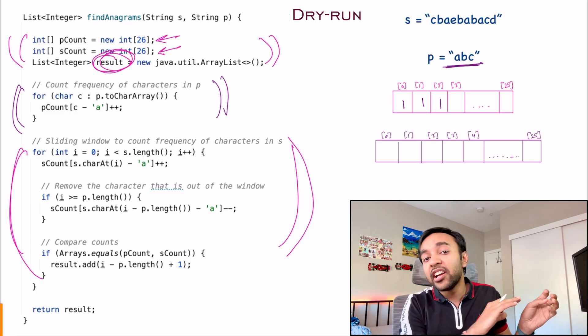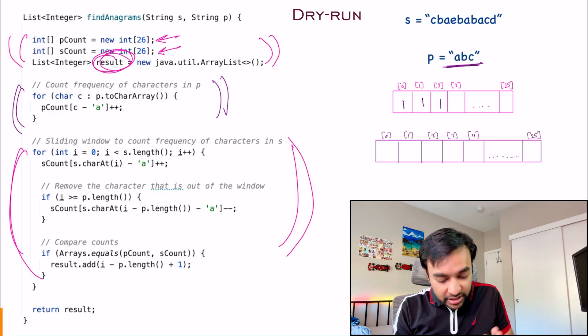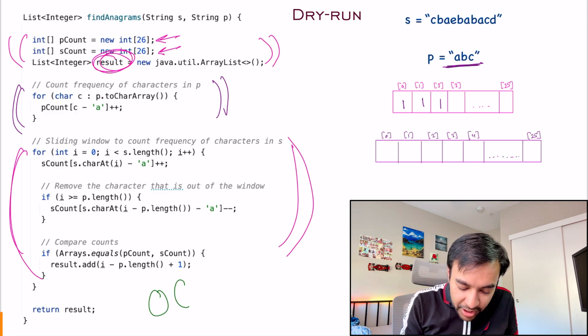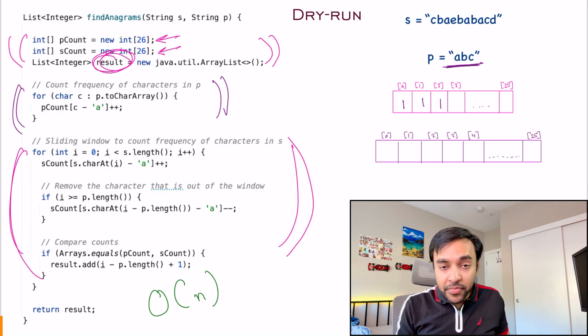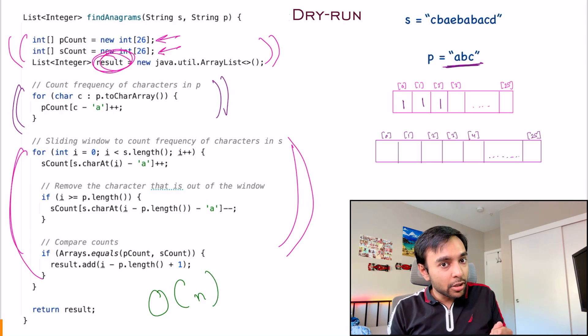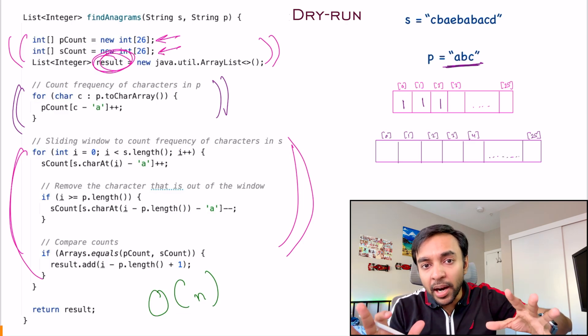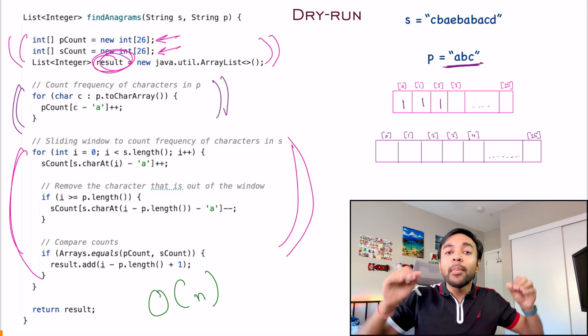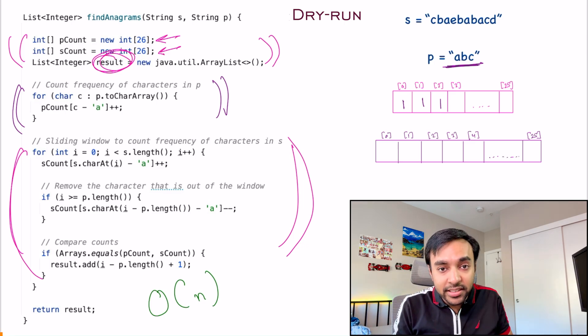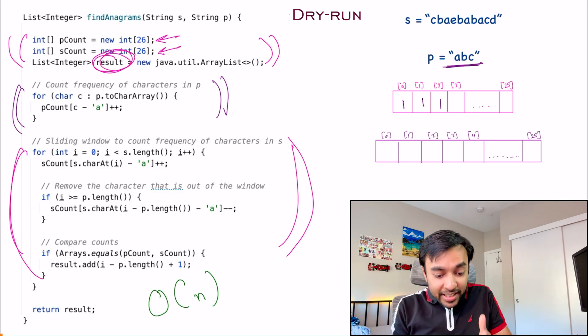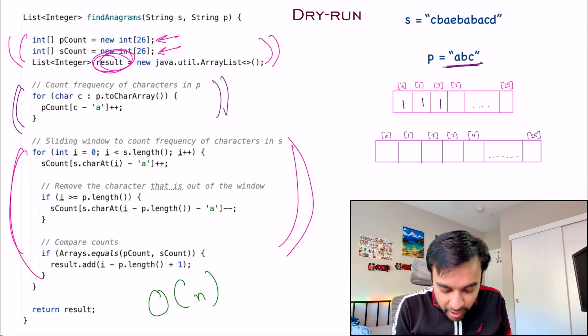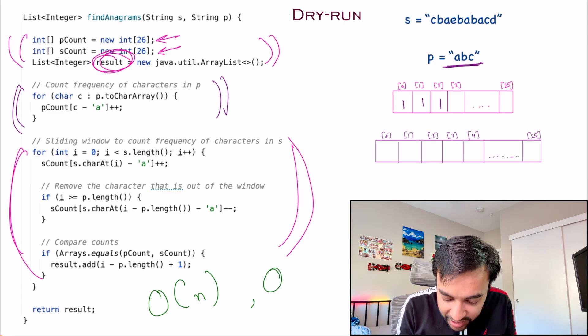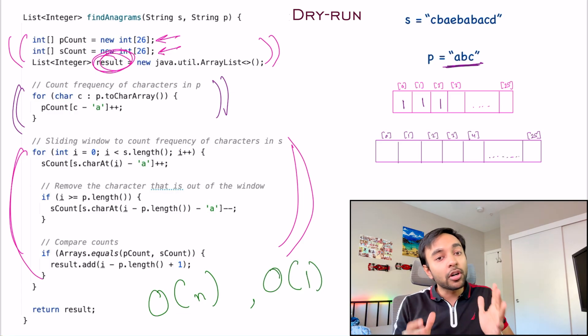Notice that we are iterating over the entire string only once. So the time complexity of this solution is order of n. And what is the space complexity? We are creating two frequency maps. But if you notice, these frequency maps will have a maximum of 26 indexes, not more than that. And that is constant space. So I can safely say that the space complexity of this solution is order of 1.